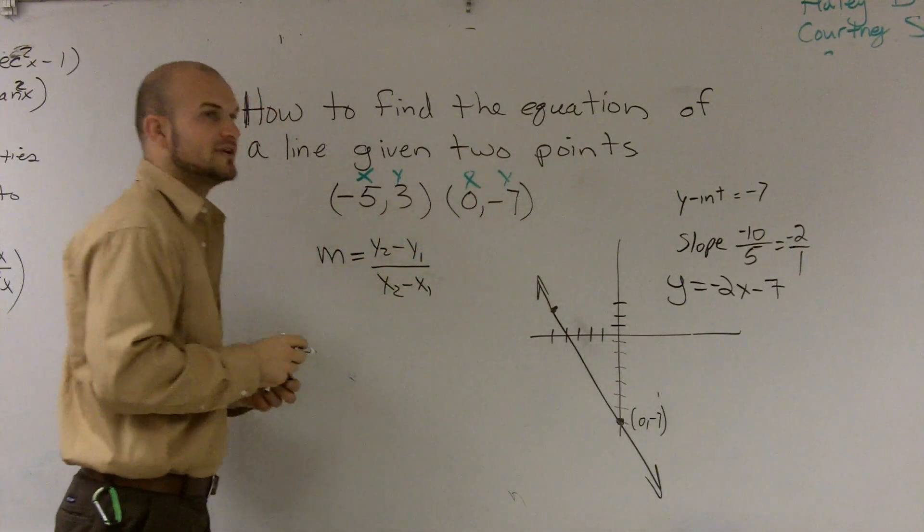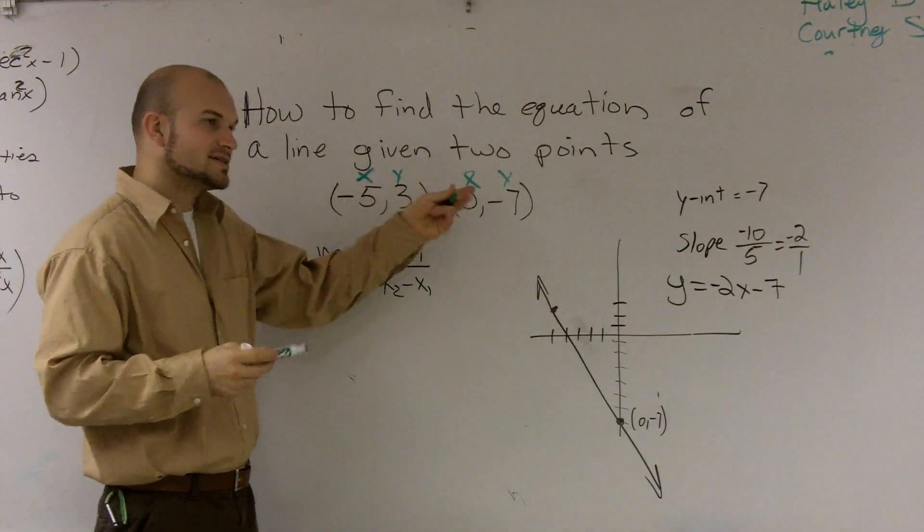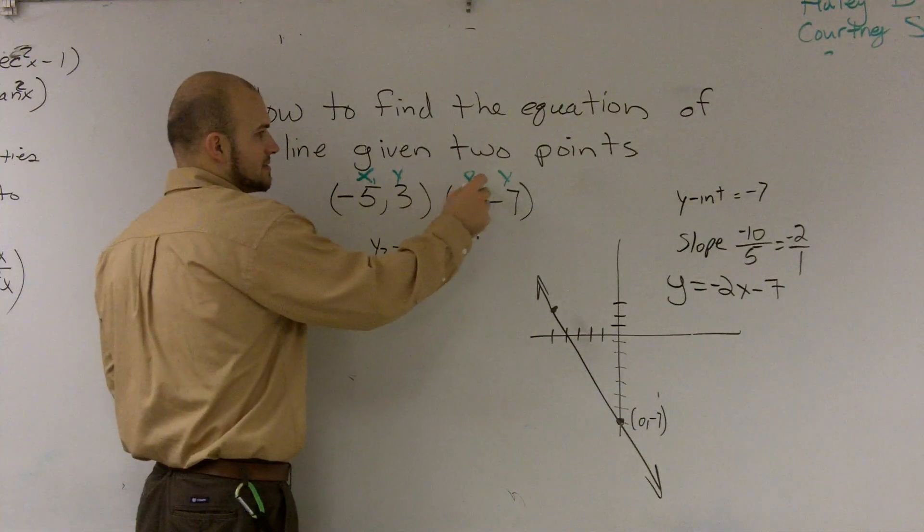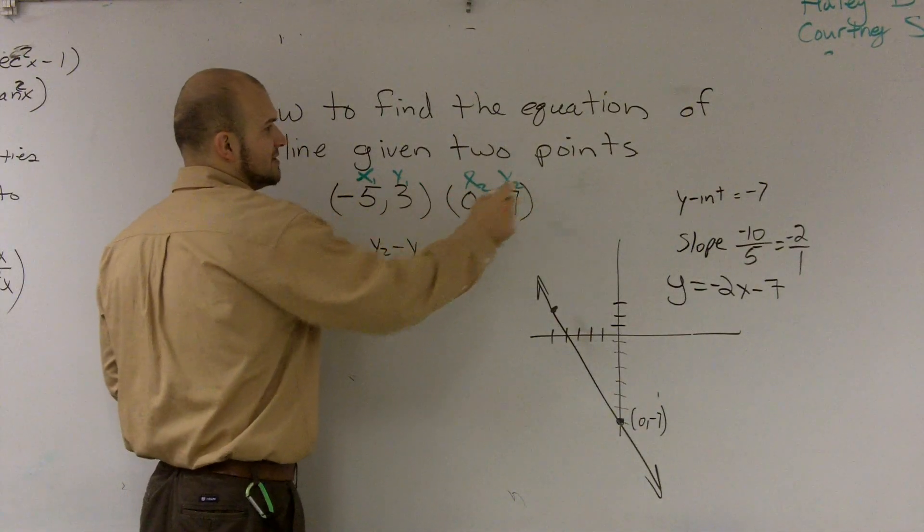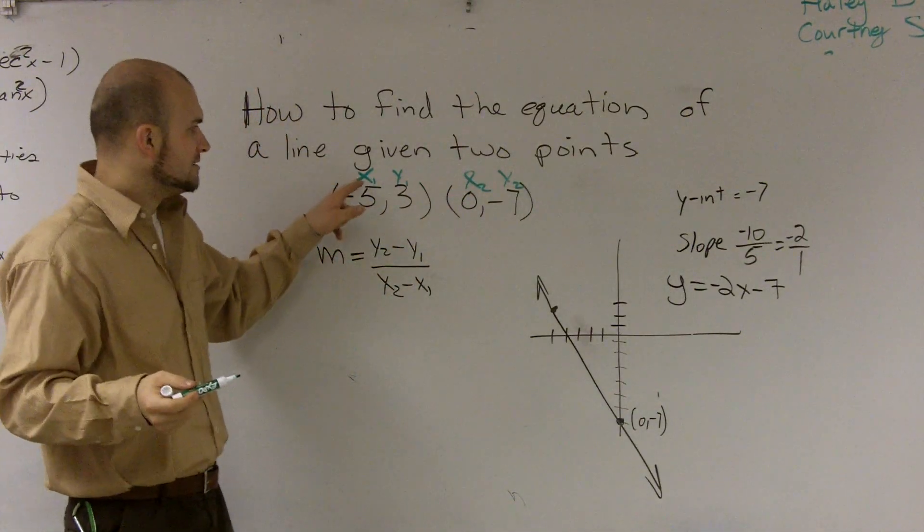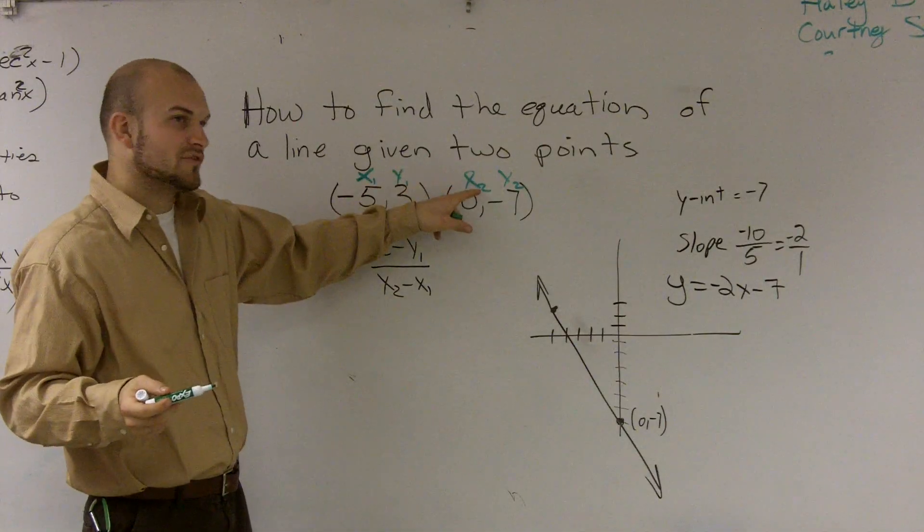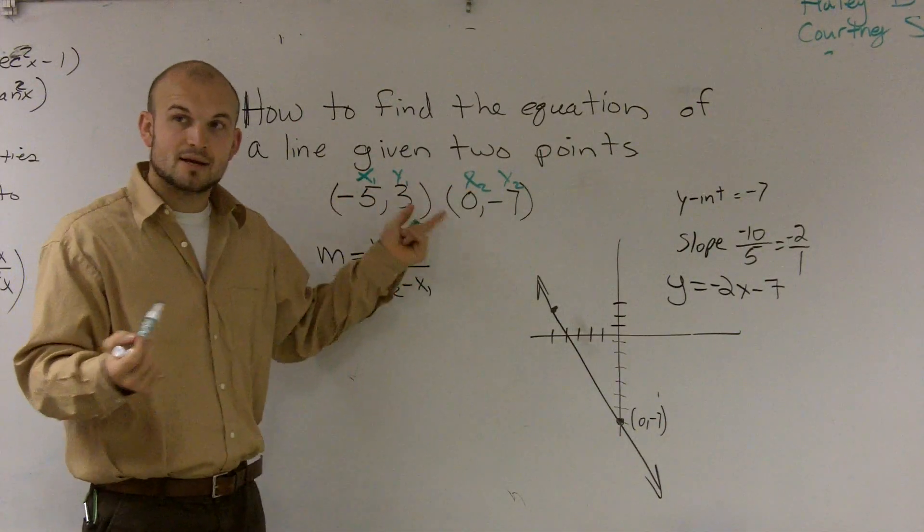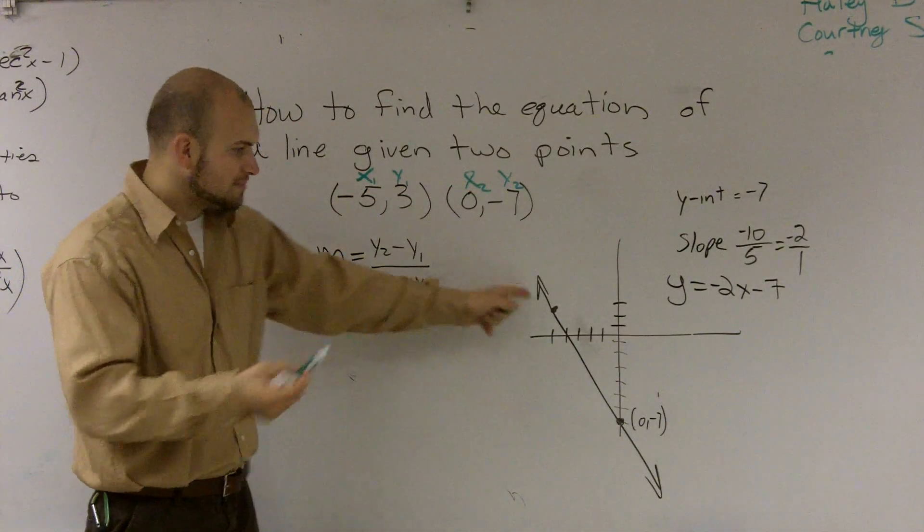And the way that we like to differentiate between our x's is we just give them little subscripts. It really means nothing more than just saying, this x is different from that x. They're both x's, but they're just different coordinates, right? They're different points.